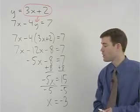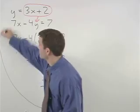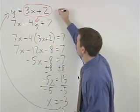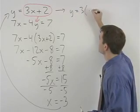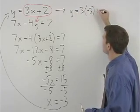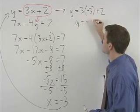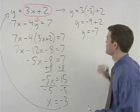To find y, plug a negative 3 back in for x in the first equation to get y equals 3 times negative 3 plus 2 which simplifies to y equals negative 9 plus 2 or y equals negative 7.